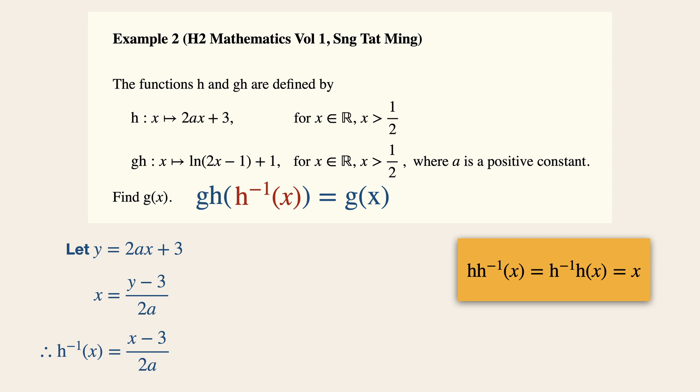Now as mentioned earlier, taking this h inverse x, we are going to substitute that into the composite function gh, which will then give us gh, h inverse. This will be equals to ln 2, let's substitute x minus 3 over 2a over here, minus 1 plus 1. And this will be equals to ln x minus 3 over a minus 1 plus 1.